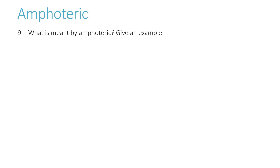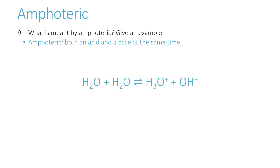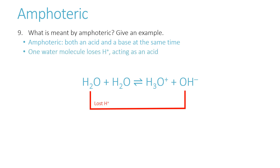What is meant by amphoteric? Amphoteric refers to a compound that can act as both an acid and a base. The best example is water. One water molecule loses H⁺ to become OH⁻, acting as an acid. Another water molecule gains H⁺ to become H3O⁺, acting as a base. In a glass of water, billions of water molecules are losing H⁺ and billions are gaining H⁺, which is why pure water has a pH of 7 — the concentration of acid equals the concentration of base.